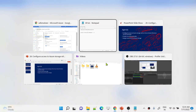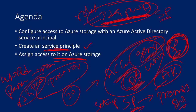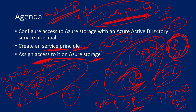With all these steps, what we have achieved: we created a service principal ID, and we granted that service principal access on my storage account. The setup of the service principal is done. In the next video, we will use this service principal — "Mahir test SP" — to access my storage account and read or write data to it. How to do all of that we will discuss in the upcoming video.